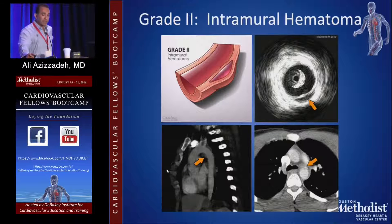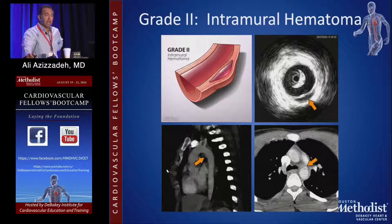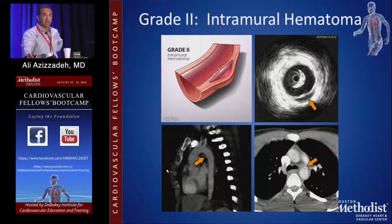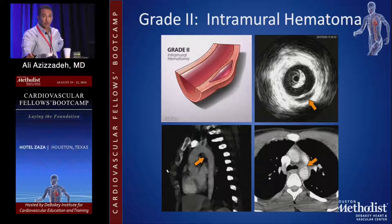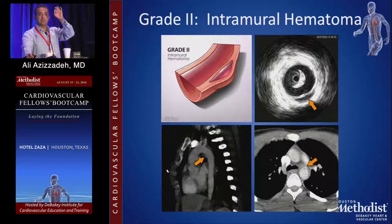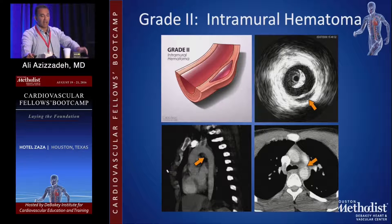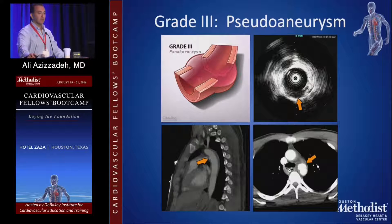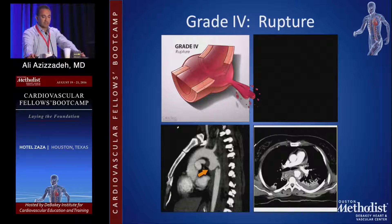We recommended medical therapy for grade one injuries and TEVAR for grade two through four. Grade two injuries can be seen on both CT scan and intravascular ultrasound — there is an external contour abnormality. The difference between a grade one and a grade two is that grade two always has an external aortic contour abnormality. Grade one is a perfect circle with some intimal tear, but at grade two you see something on the outside of the aorta.